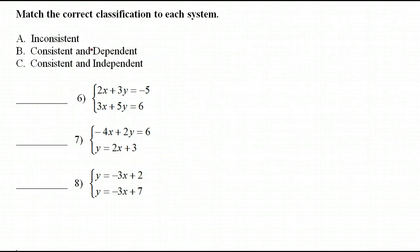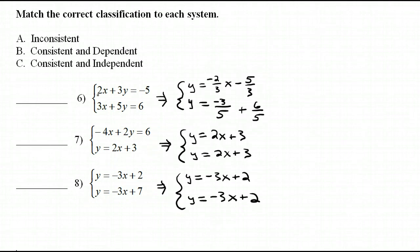If I want to match the correct classification, I need to review what these are. Inconsistent means the lines are parallel and there's no solution. If there is a solution, at least one, then we say the system is consistent. If the lines are different lines, then they're independent. If they are the same line, we say they're dependent. The way that I do this without actually having to solve is I'm going to put them all in slope-intercept form and then look at their slopes. This first system, the slopes are different, which means those are not the same line and they're not parallel lines. So those would be independent lines. For the second one, the slopes and y-intercepts are the same, so these are the same line, which means they're dependent.